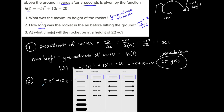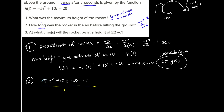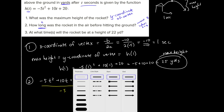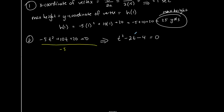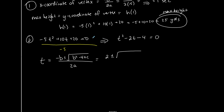I can solve it using multiple methods. Everything is divisible by 5, so I'm going to divide by negative 5 to make the leading term positive. Everything gets divided by negative 5, giving me t squared minus 2t minus 4 equals 0. I initially would try to factor this, but it's not factorable because there are no factors of 4 that add to negative 2. So I'm going to need to use the quadratic formula. T equals the opposite of b plus or minus the square root of b squared minus 4ac, all over 2a.